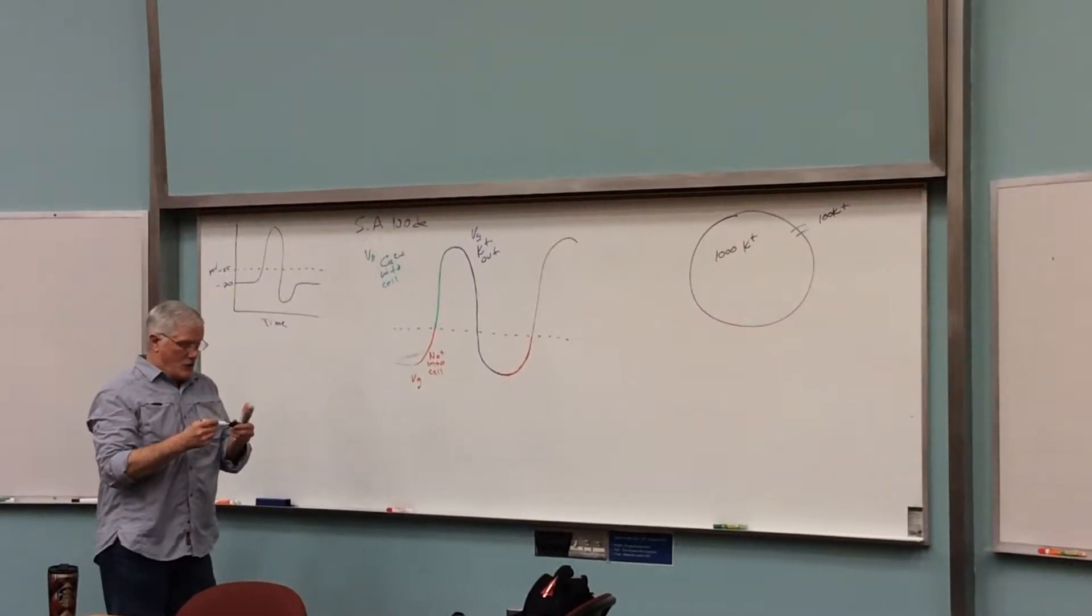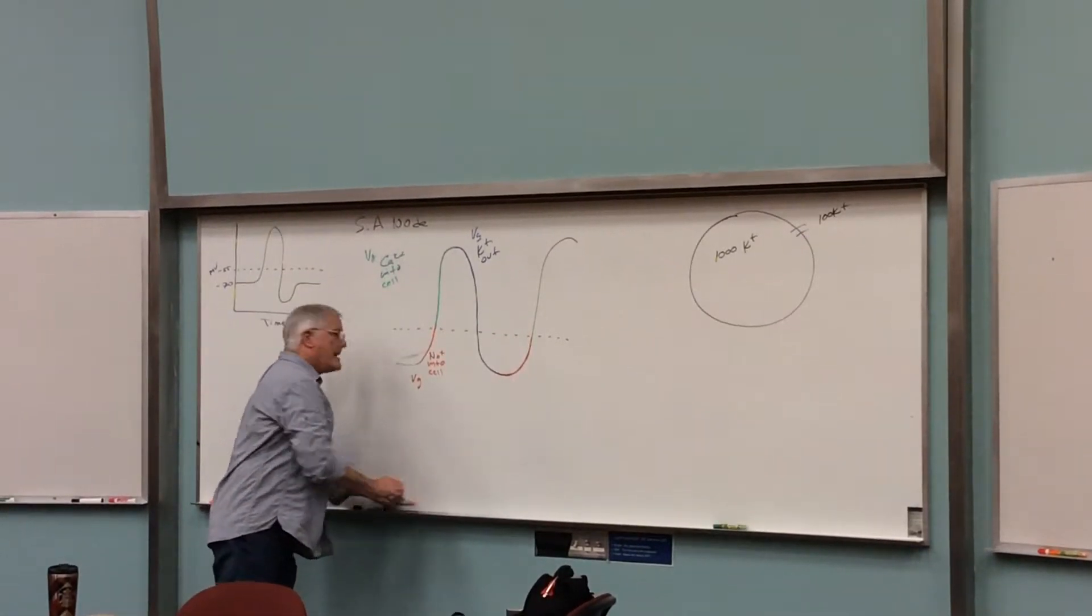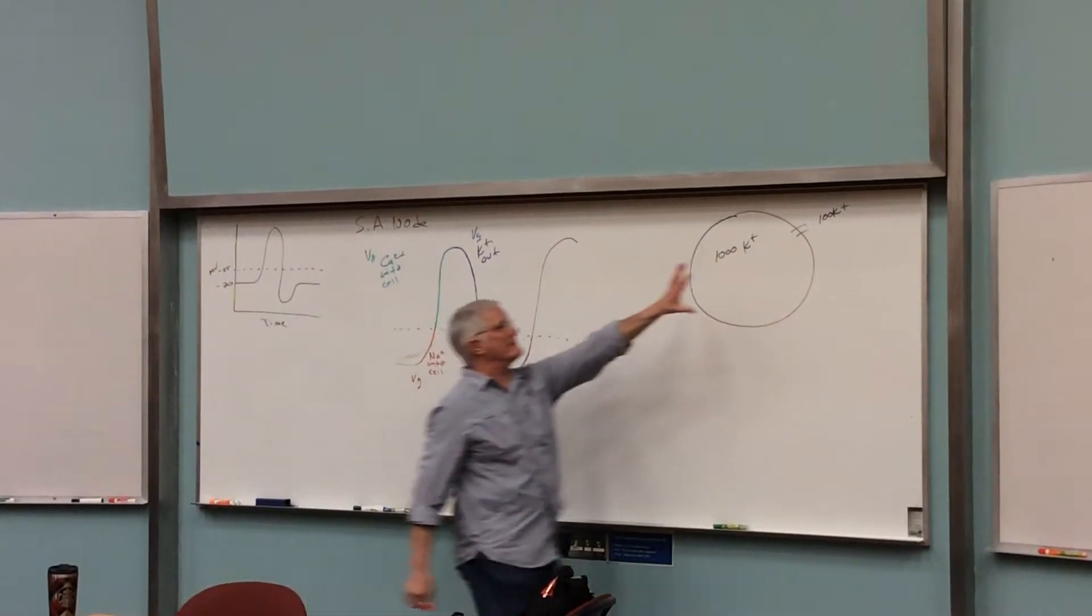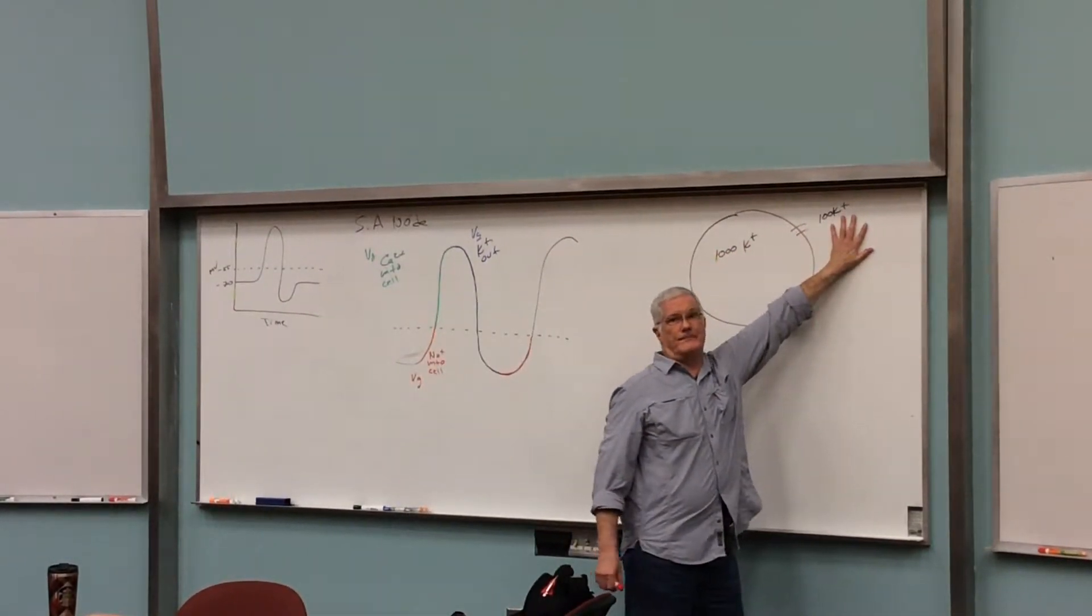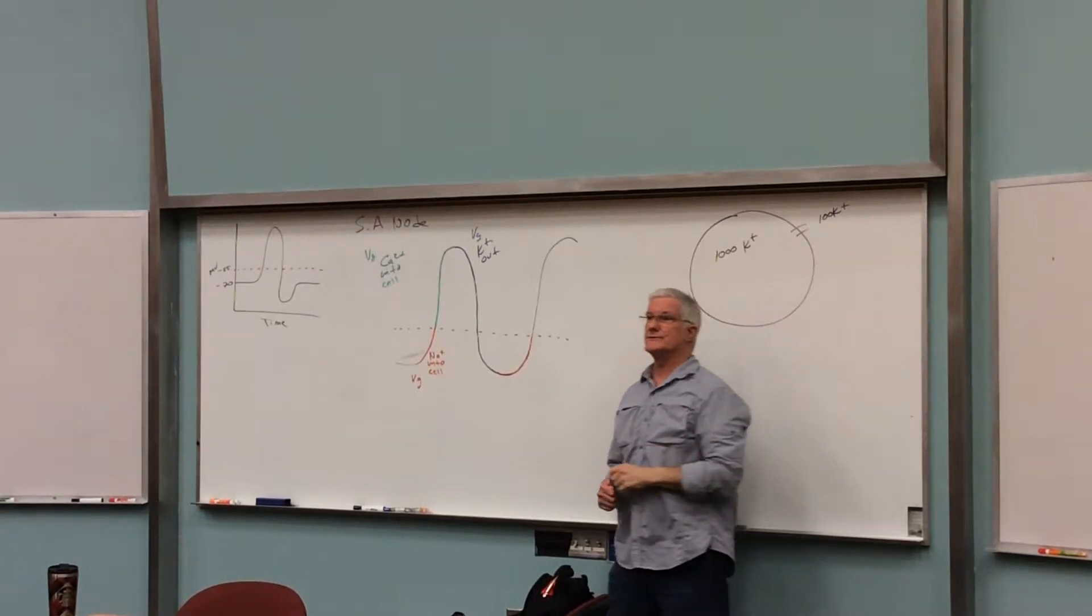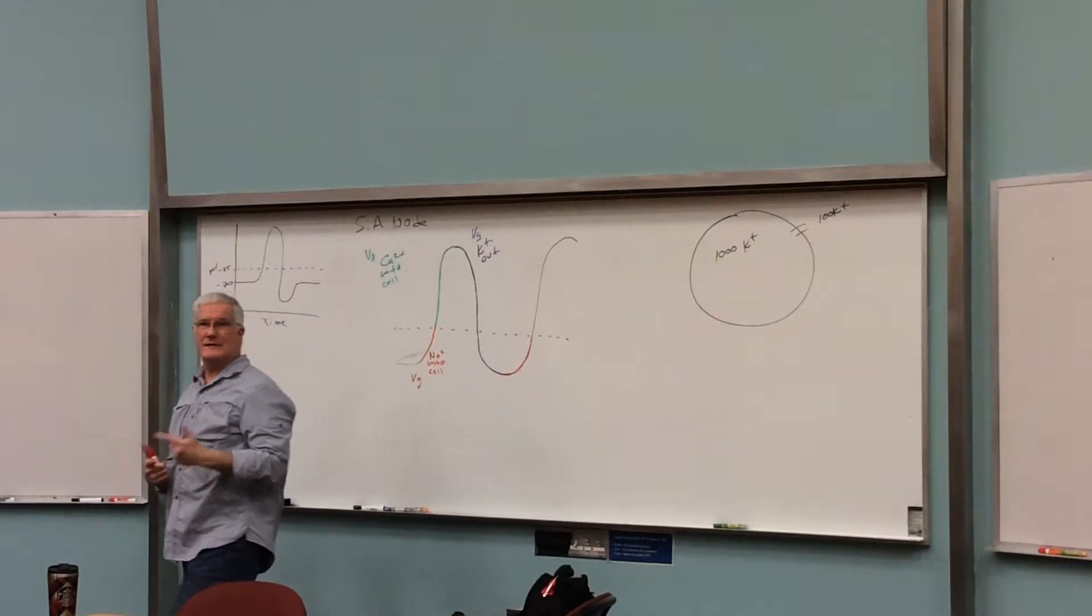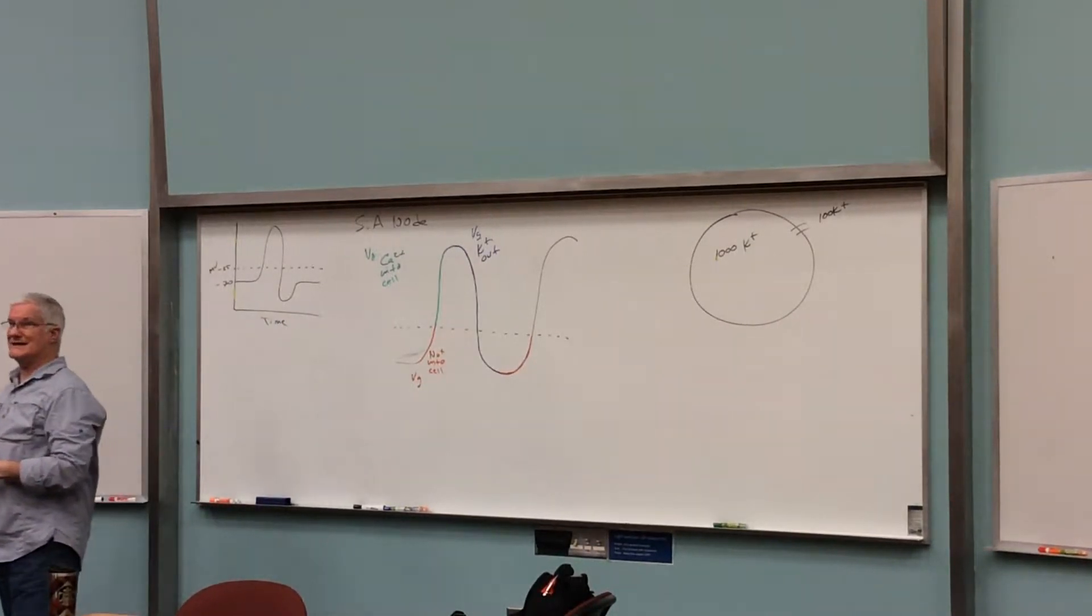Does anybody know of a way to cause the extracellular environment to become higher than normal in potassium values, where you actually have too much potassium in your blood? How can you get too much potassium in your blood? Any ideas?